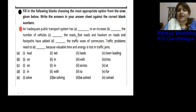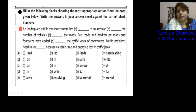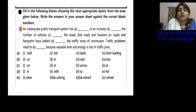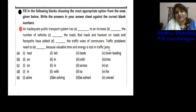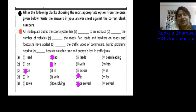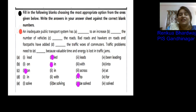Continuing: 'Roads and hawkers on roads and footpaths have added dash to the traffic.' The answer is 'on' — 'added on to the traffic.' Traffic problems need 'to be solved' because valuable time and energy is lost in traffic jams. Checking our answers against the answer scheme: led, in, on, to, be solved — five out of five correct.